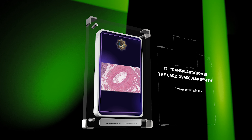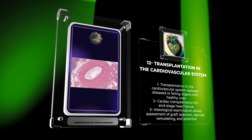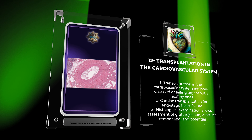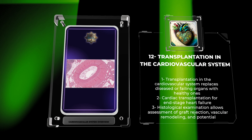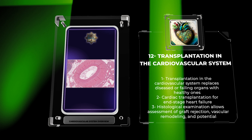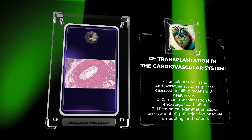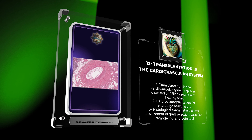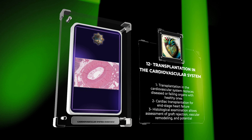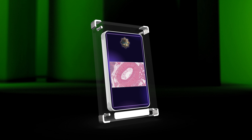Transplantation in the cardiovascular system involves the surgical replacement of diseased or failing organs, such as the heart or blood vessels, with healthy ones from a donor. Cardiac transplantation is considered the gold standard treatment for end-stage heart failure. Histological examination of transplanted organs allows for assessment of graft rejection, vascular remodeling, and potential complications such as graft atherosclerosis.